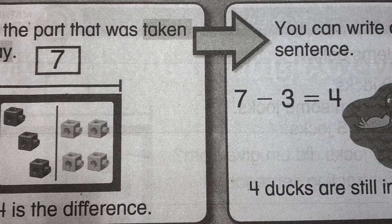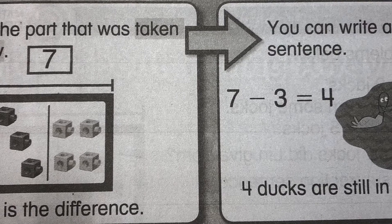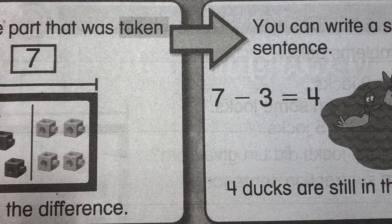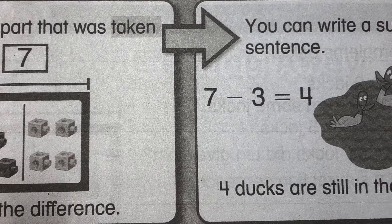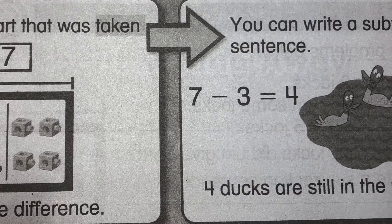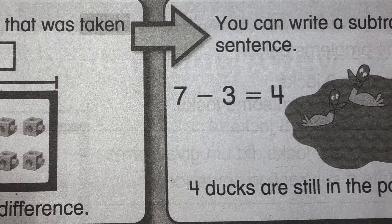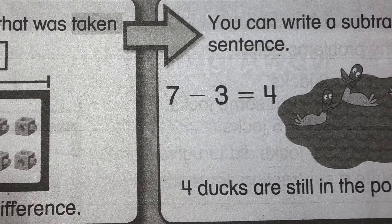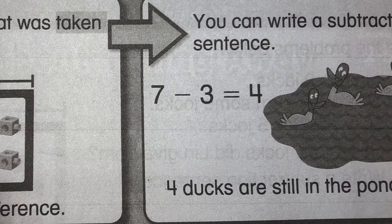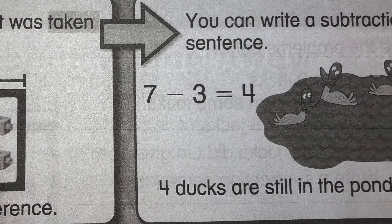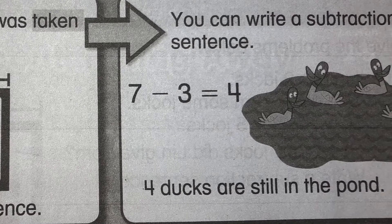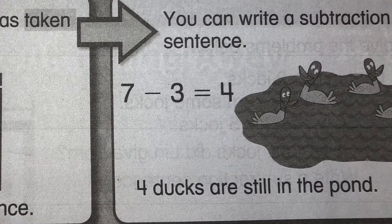So four is the difference. You can write a subtraction sentence: seven, take away three, equals four. We took away three because three ducks flew away — that was the part we were supposed to take away.